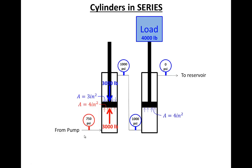Isn't that interesting? When the load was on the right side, only 750 psi needed to be developed to overcome the 4,000 pound load, but when the load was on the left side, 1,000 psi was needed for the same load. It's also interesting to note that 750 psi goes in across this piston and 1,000 psi comes out — we've essentially used the unloaded piston as a pressure amplifier.